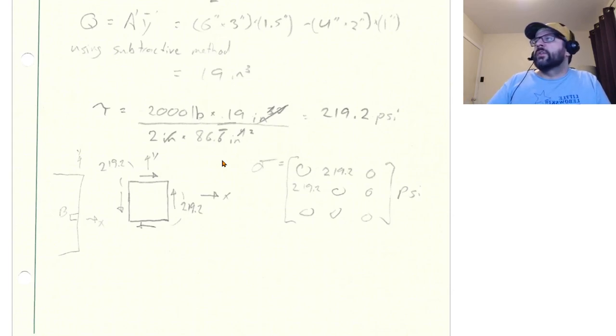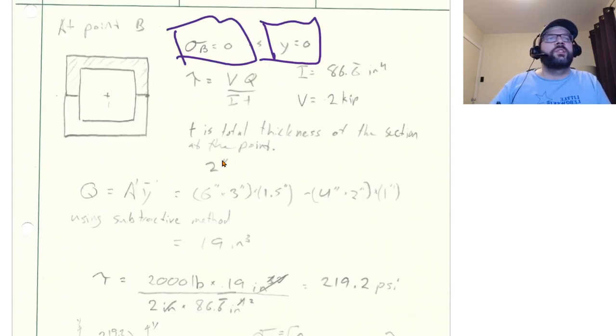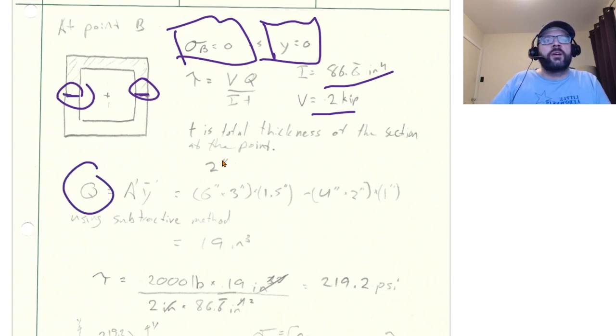The shear stress however is not. Our shear stress is just going to be V Q over I T. We know what our I is, we know our V is 12 kips. T is going to be the total thickness of the section at that point, so again that's this plus this, those two one inch thicknesses on either side, so that's two inches.